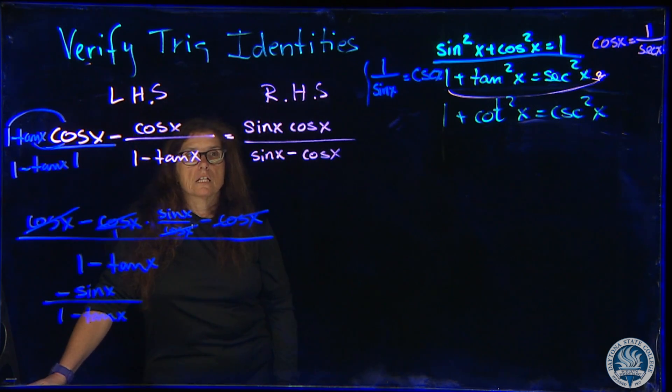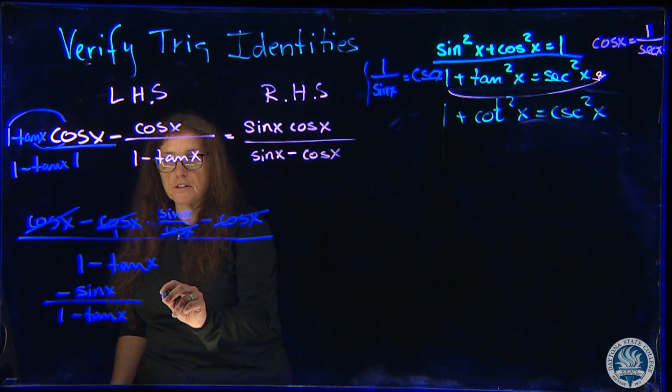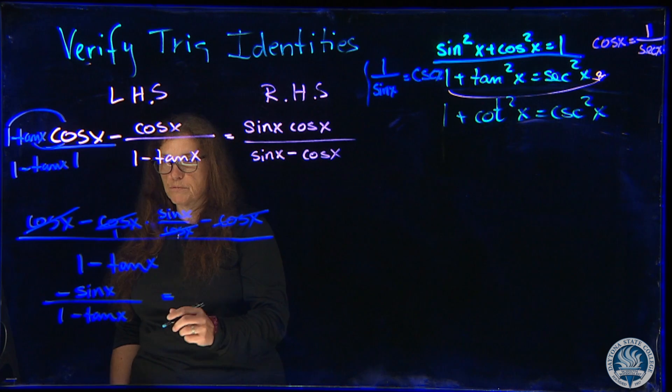That does not look like anything that we need to get on the right-hand side. Remember, my second advice would be if we have a tangent and a cotangent, to change it into sine and cosine. So let's see what happens here. I'm going to continue on because I have no room.